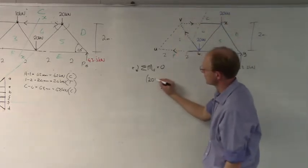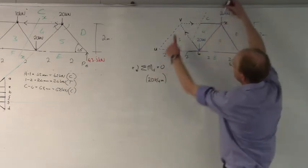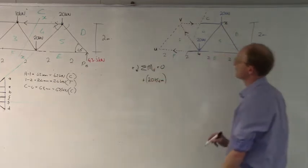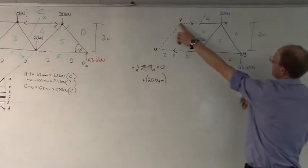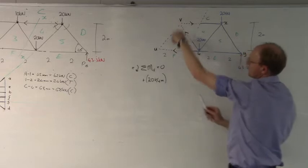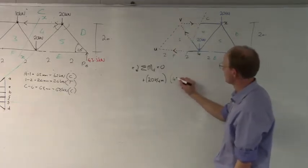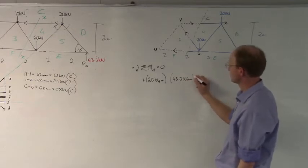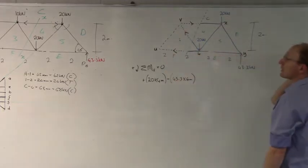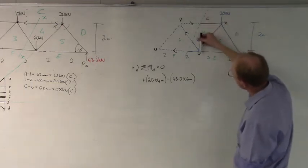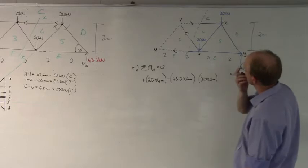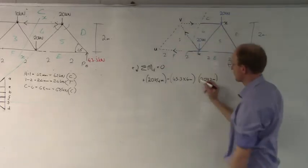So it's 20 times four meters, and pressing it down at this point it goes clockwise, so it is positive. The second force is 43.3 — my reaction — at a total distance of two, four, six meters perpendicular distance from B. So we have 43.3 times six meters, and this force will go anti-clockwise when pressed up, so that's negative. Then I've got one more force: 20 kilonewtons times a total distance of only two meters. That force goes clockwise, so it's positive.